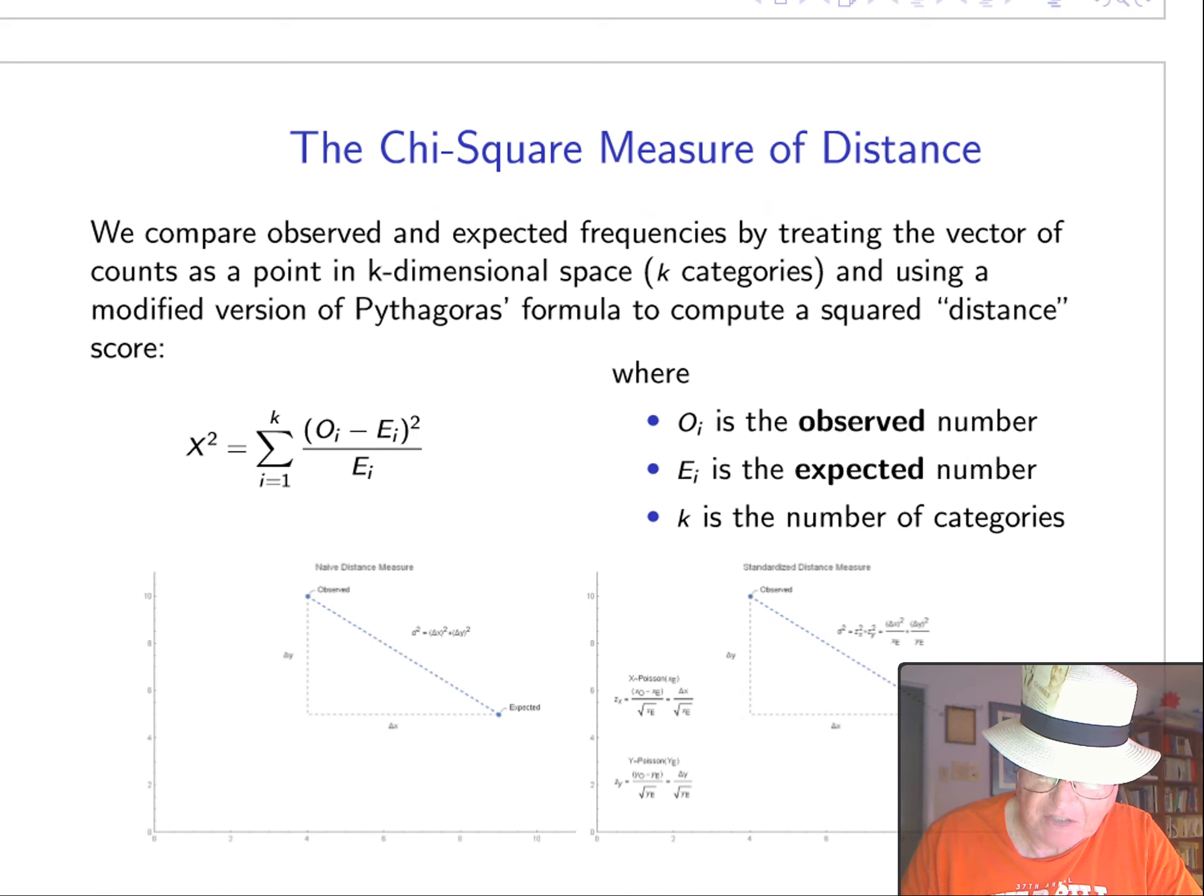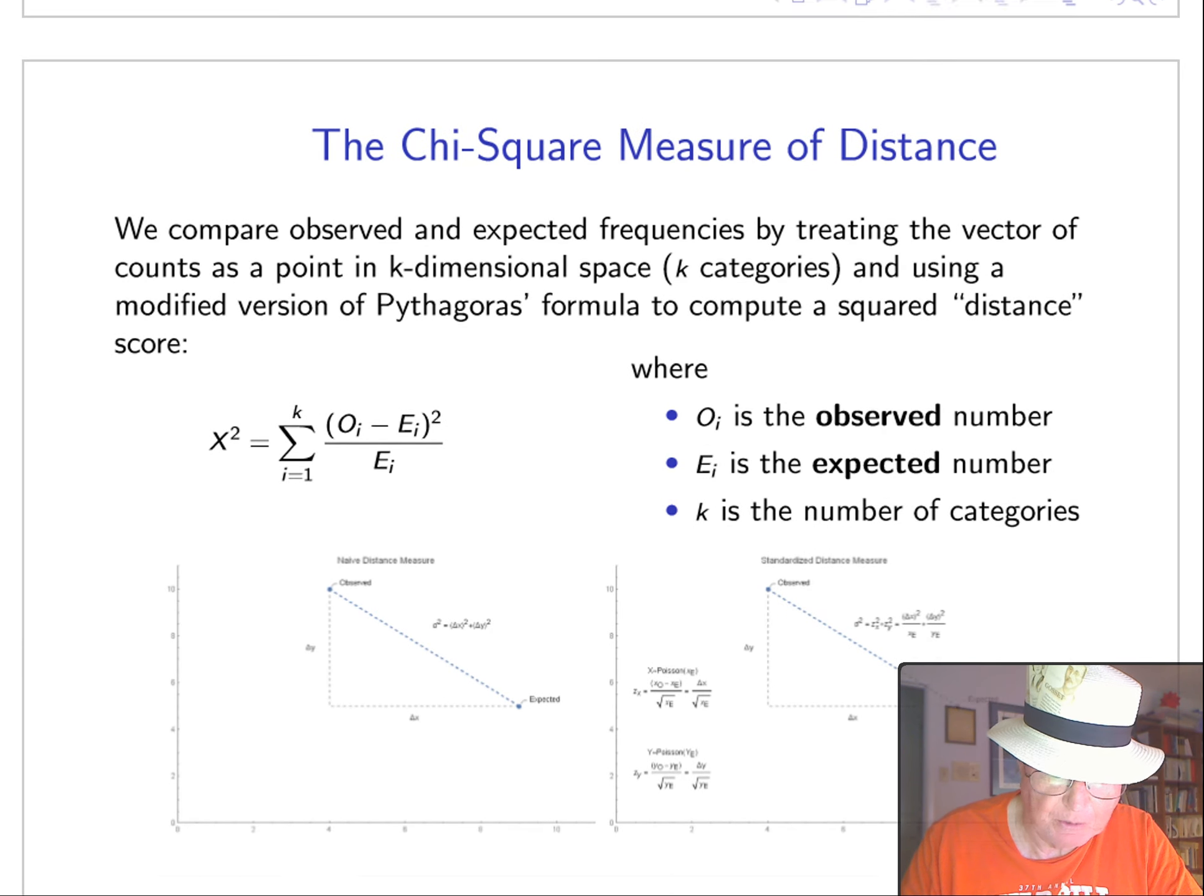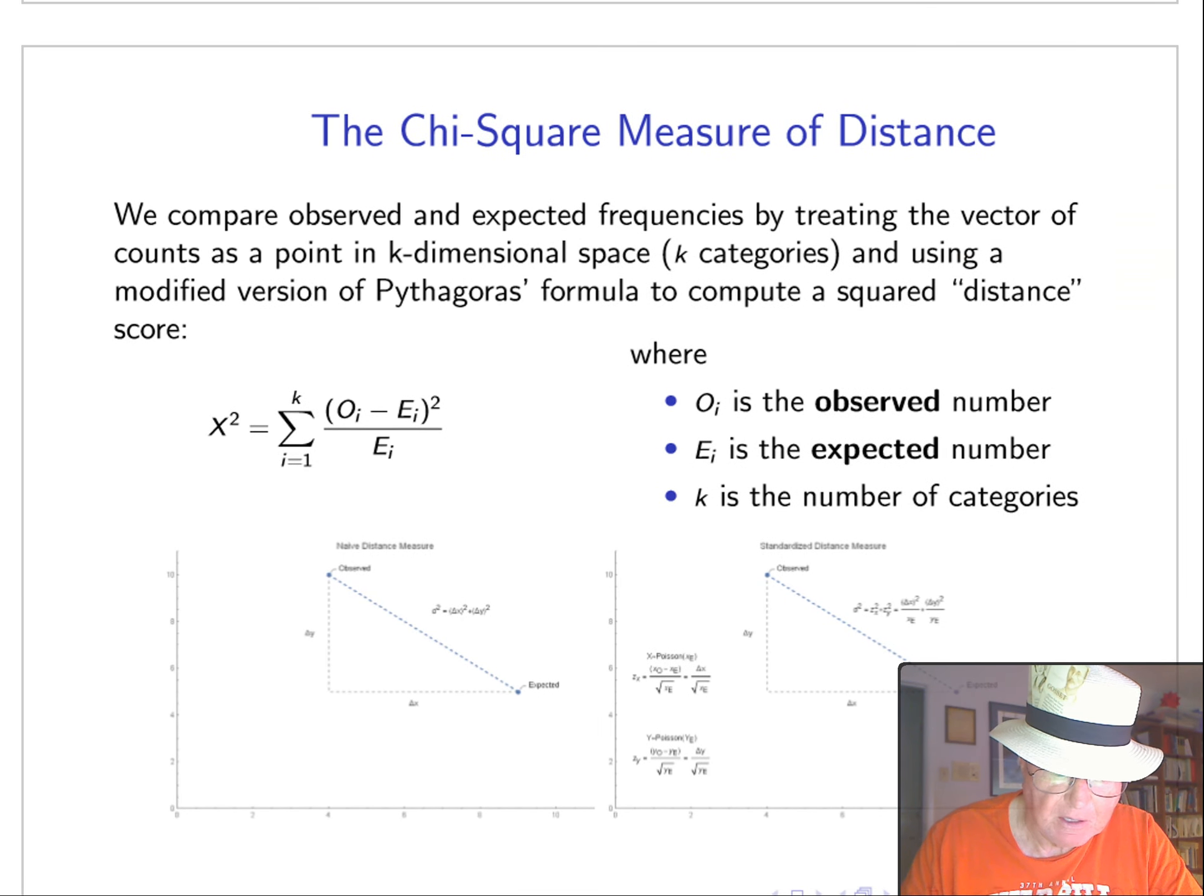We can look at sample data and compare it to some model by comparing the observed and expected frequencies, treating them as a vector of counts, as points in a k-dimensional space, there's k categories, and using a modified version of the Pythagoras formula to compute a square distance score.